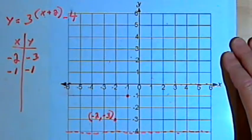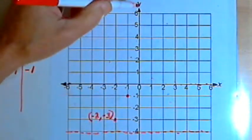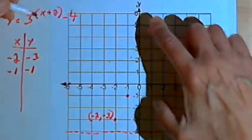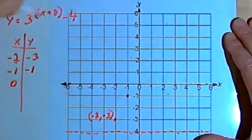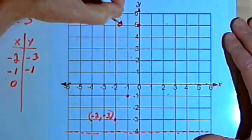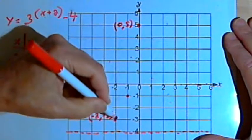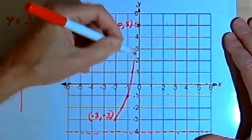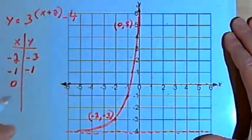When x is negative 1, I'm going to have 3 to the negative 1 plus 2. Negative 1 plus 2 is 1, so 3 to the first power is 3. And 3 minus 4 is negative 1. So I'll have a point at negative 1, negative 1. When x is 0, that gives me the vertical intercept. I have 3 squared, which is 9. And 9 minus 4 is 5. So I should have a y-intercept at 0, 5. It's an increasing function, so I'll draw my curve and it's going to look like that.